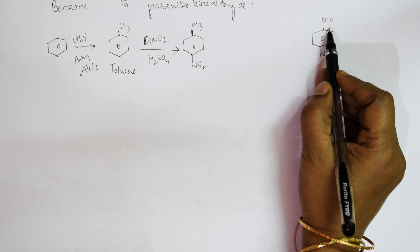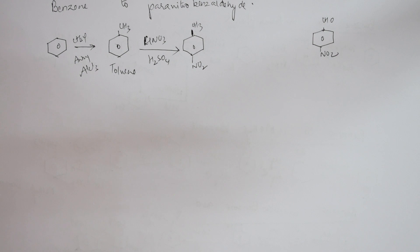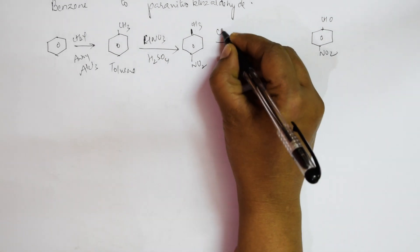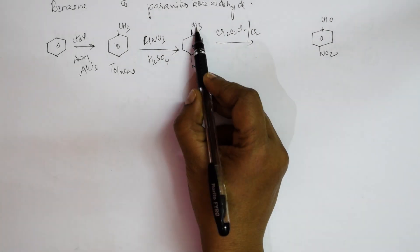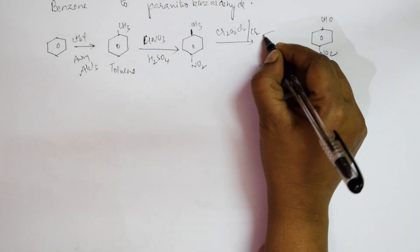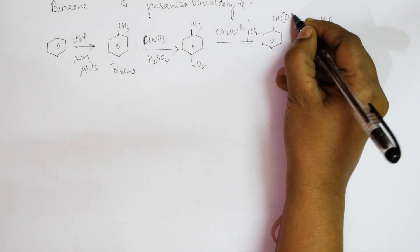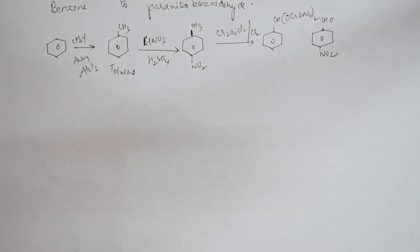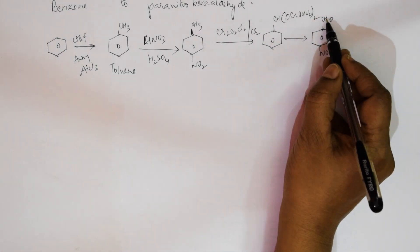For this conversion we use the Etard reaction — chromyl chloride (CrO2Cl2) in the presence of carbon disulfide (CS2). This converts CH3 to a CHO·CrOHCl2 complex intermediate.